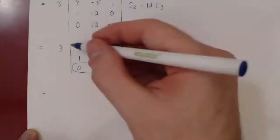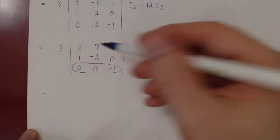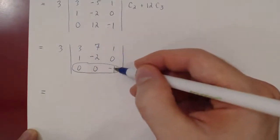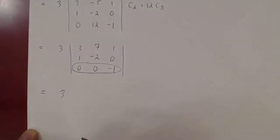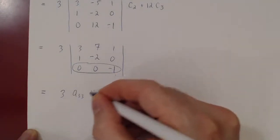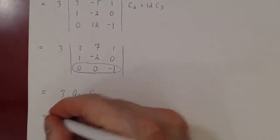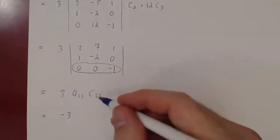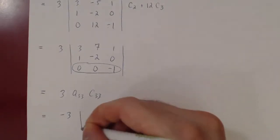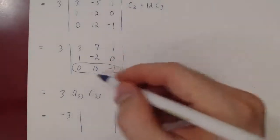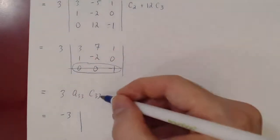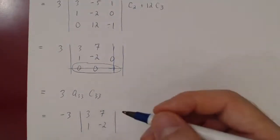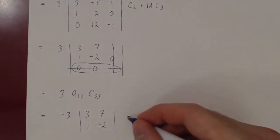We don't have to compute C31 or C32, as both are multiplied by 0 and get killed. All we're left with is A₃₃ times C₃₃. A₃₃ is negative 1, so this gives negative 1 times 3 equals negative 3. The cofactor C₃₃ is negative 1 to the 6th, which is positive 1, times the determinant of the 2x2 matrix obtained by deleting row 3 and column 3, giving the matrix with entries 3, 7, 1, negative 2. For this 2x2, we use AD minus BC.